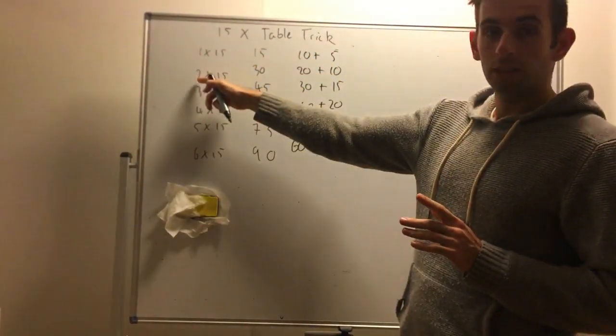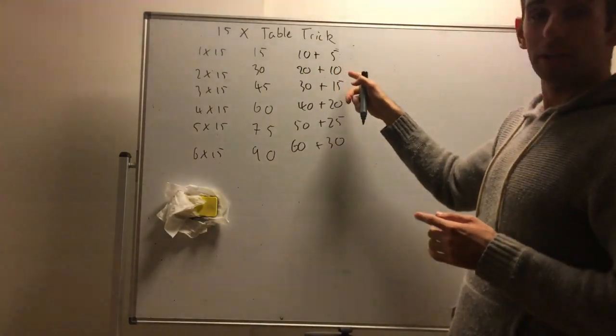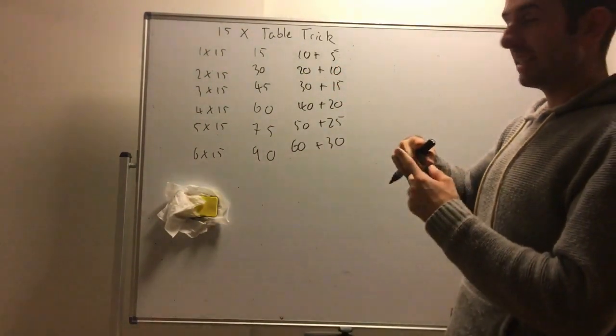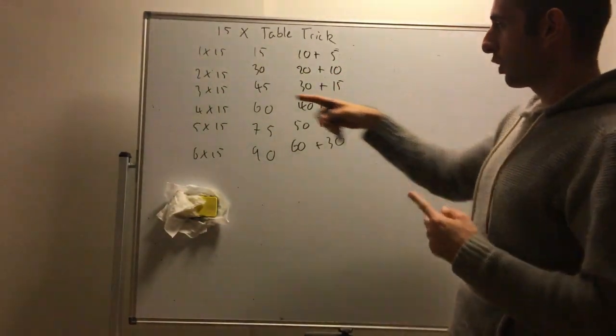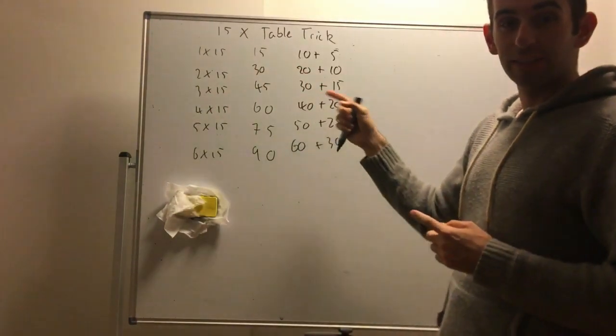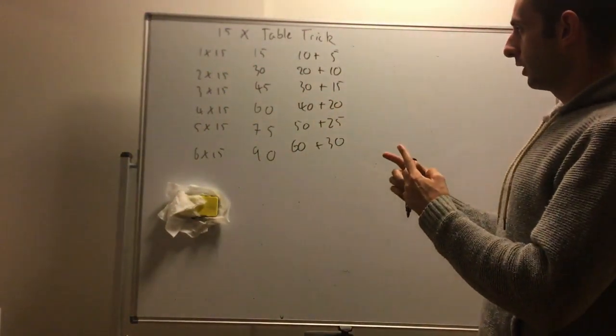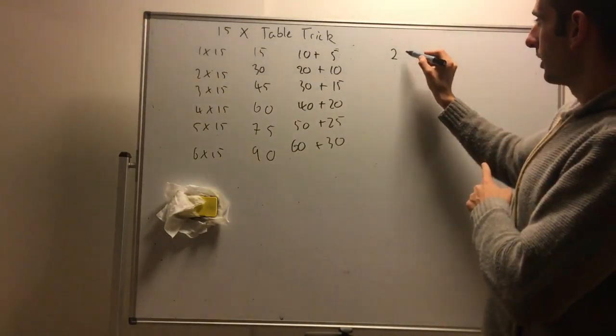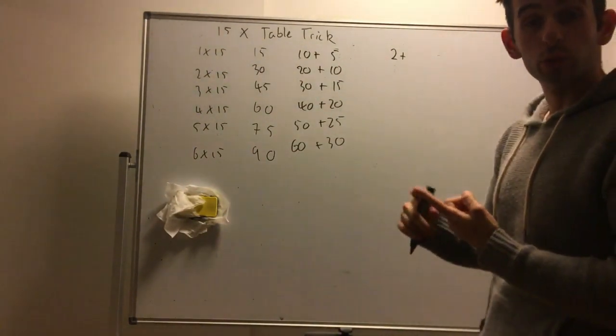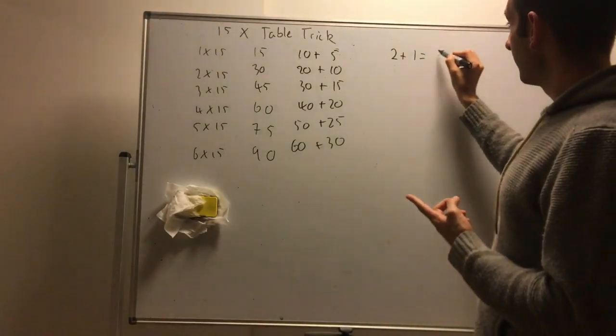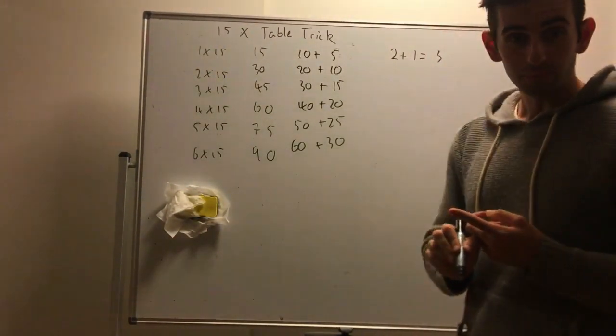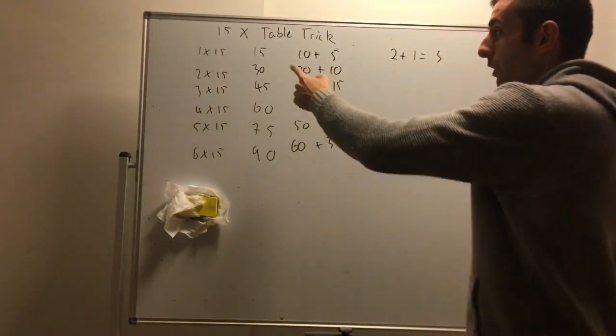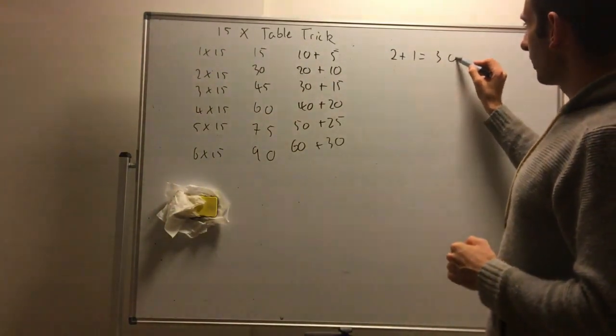The first digit times 10 is 20, add half that number. But a quicker way to see that is instead of timesing it by 10 and then adding half is to do it straight away. So what I mean is get the 2, add half of 2. What's half of 2? 1, that gives you 3, but then we times 10 at the end which means we just chuck a 0.